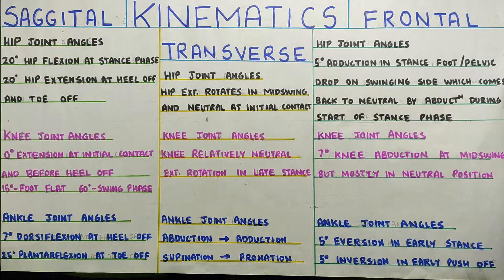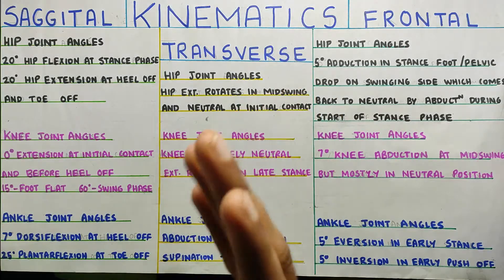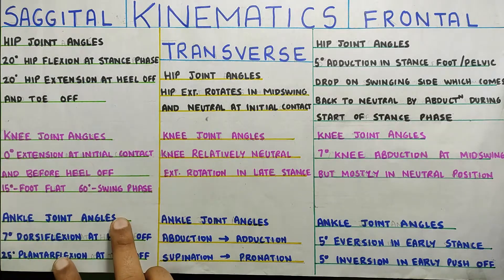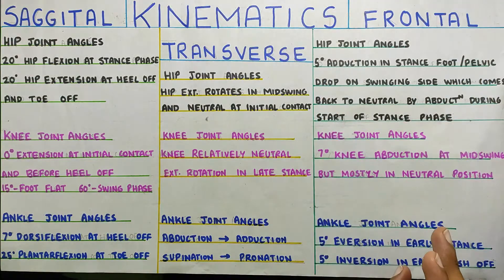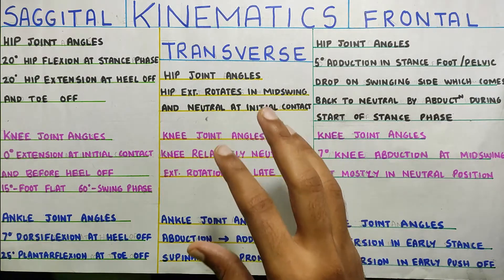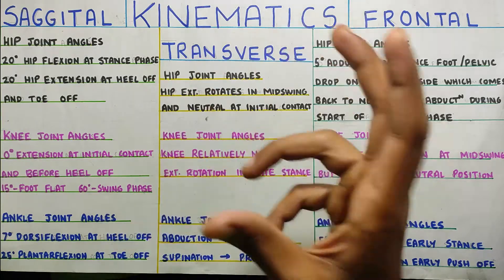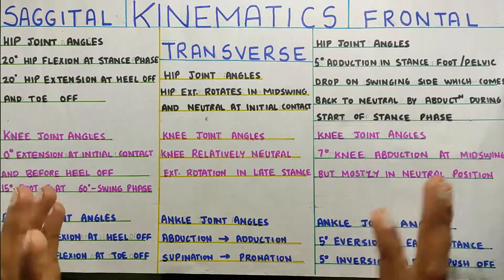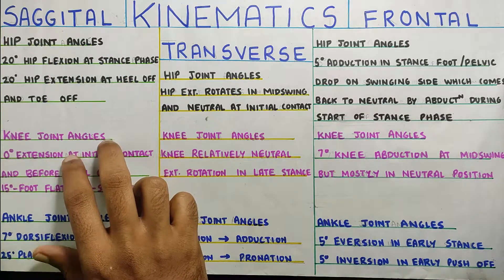In this video we are going to talk about the kinematics of the gait. We will talk about the angles seen in the gait cycle at each joint — the hip joint, knee joint, and ankle joint. This is the sagittal plane, this is the transverse plane, and this is the frontal plane. The data in the transverse plane is comparatively less compared to the sagittal and frontal planes. So the sagittal plane will be very important and we will cover the frontal and transverse planes more quickly. We will take each plane one at a time and look at the hip, ankle, and knee joint.